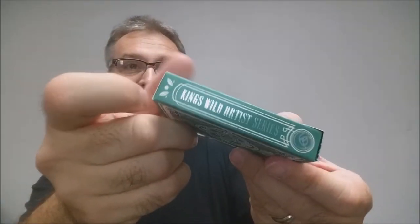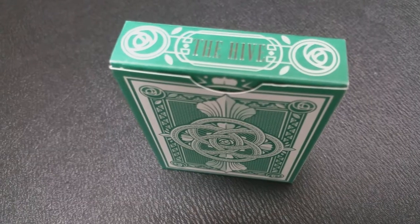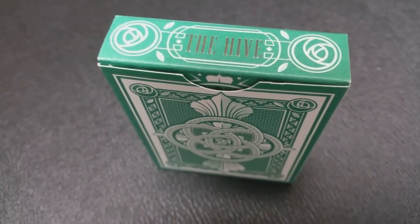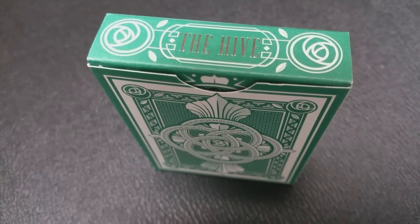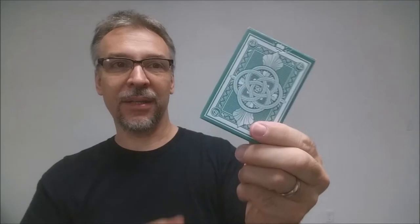This side says King's Wild Artist Series, and so does this side. The bottom has some ad copy about King's Wild Project, and the top says the Hive. You have these little rose circled symbols all throughout as well, and then the back design of the tuck case is the back design of the cards.